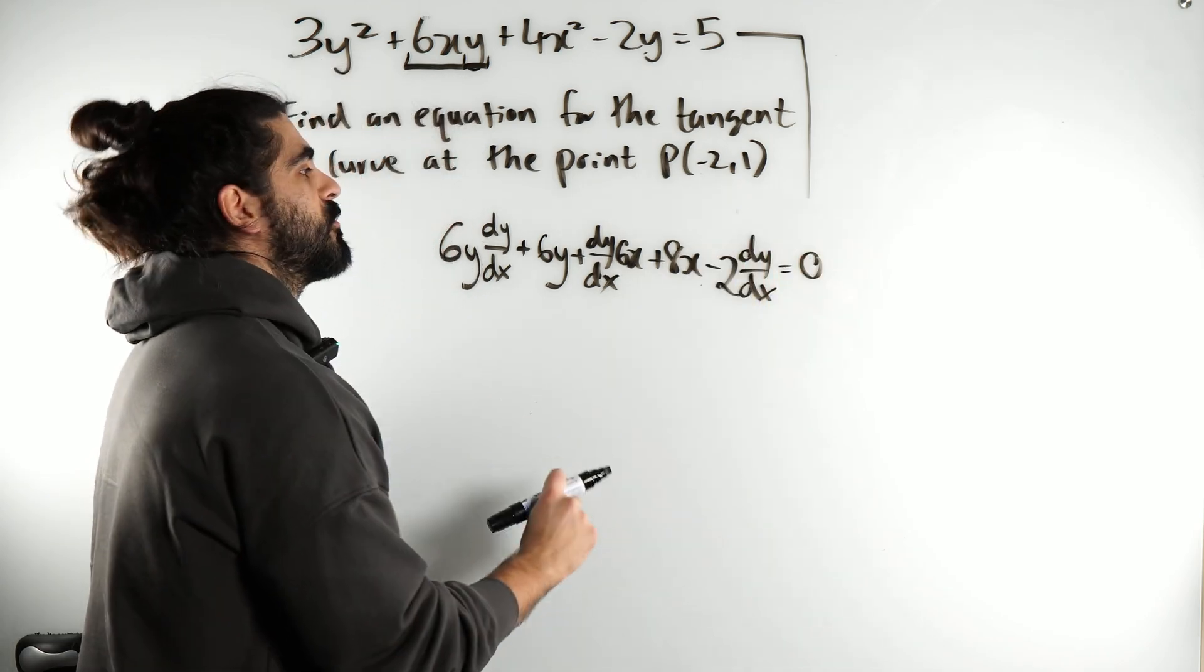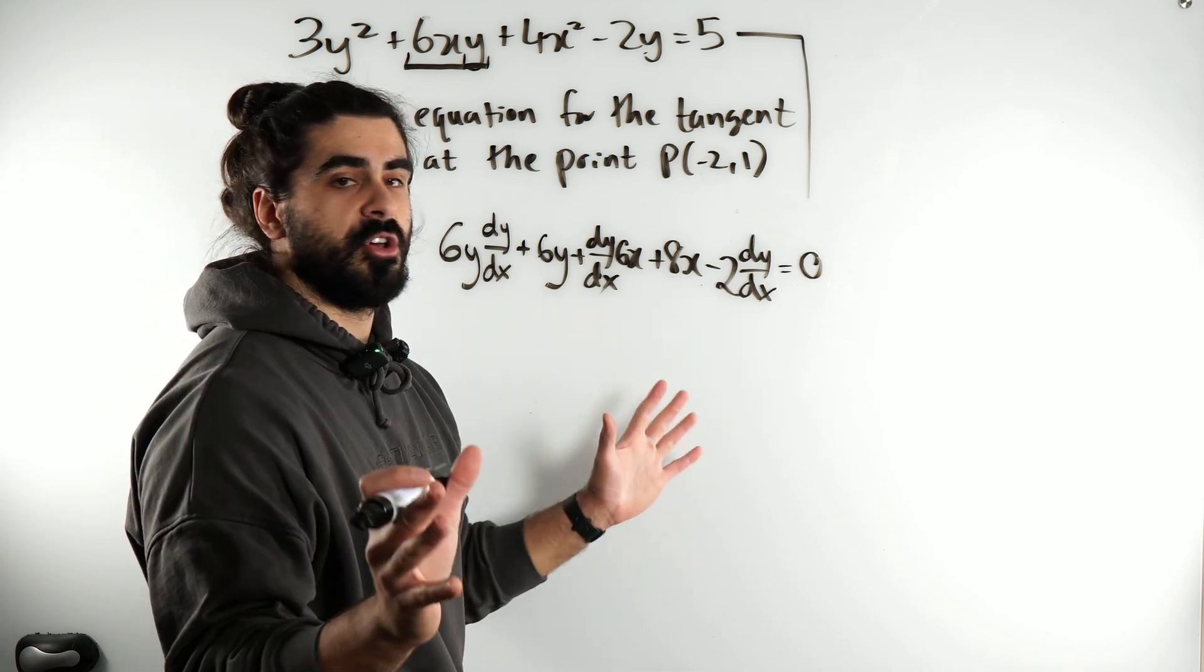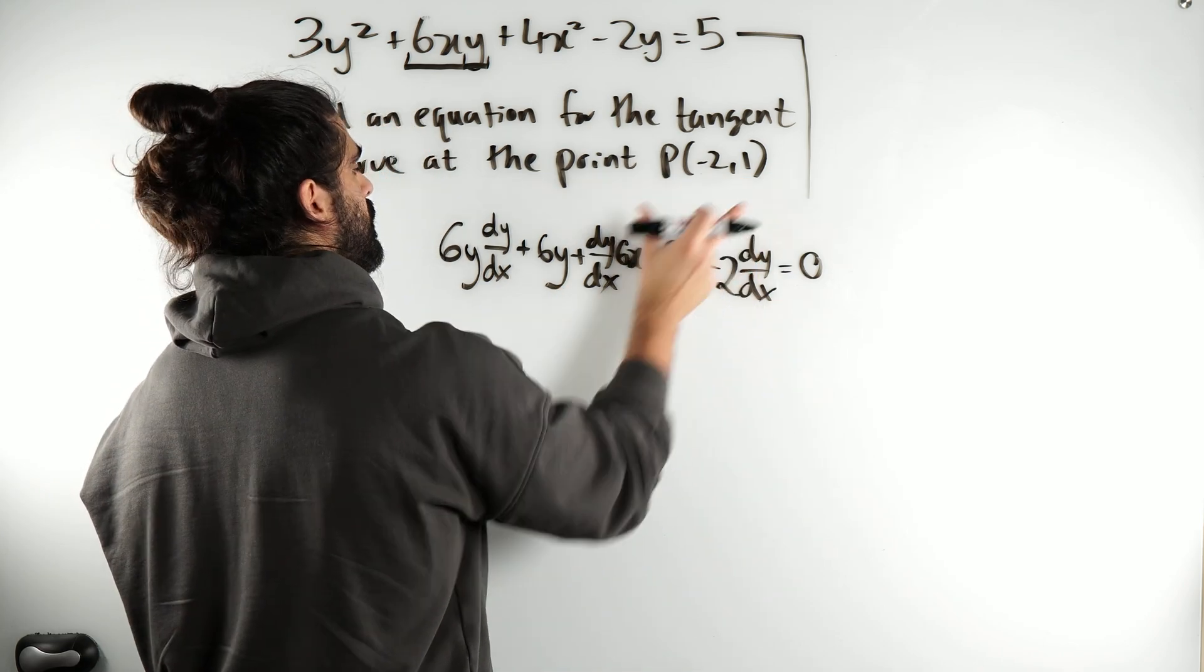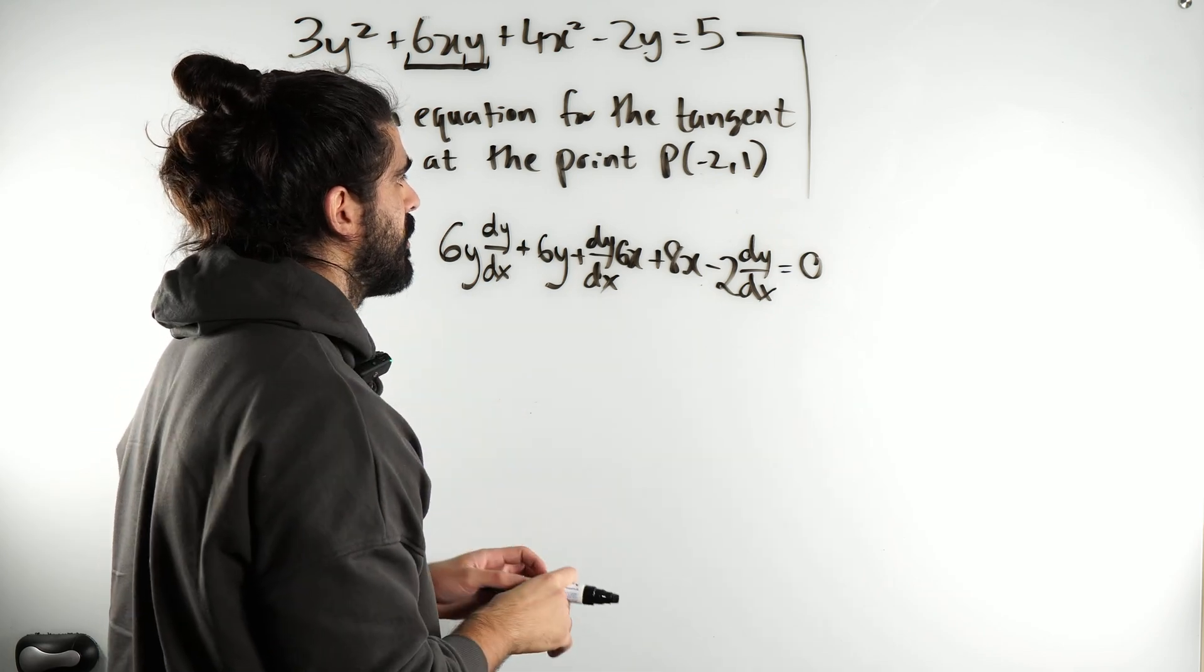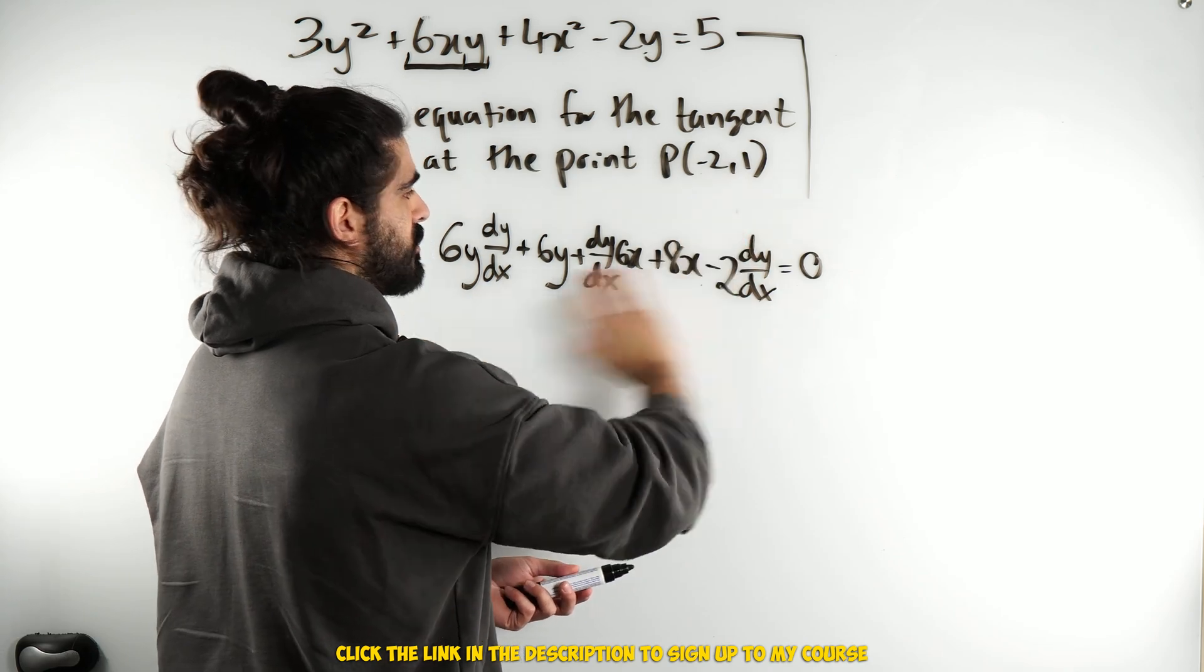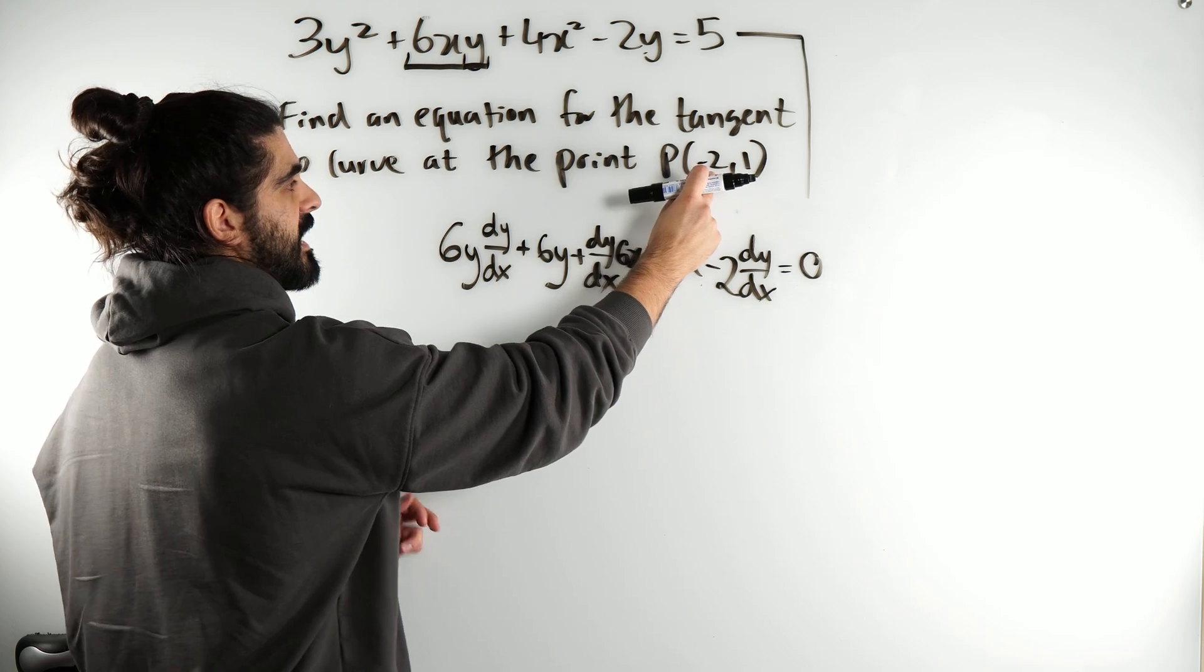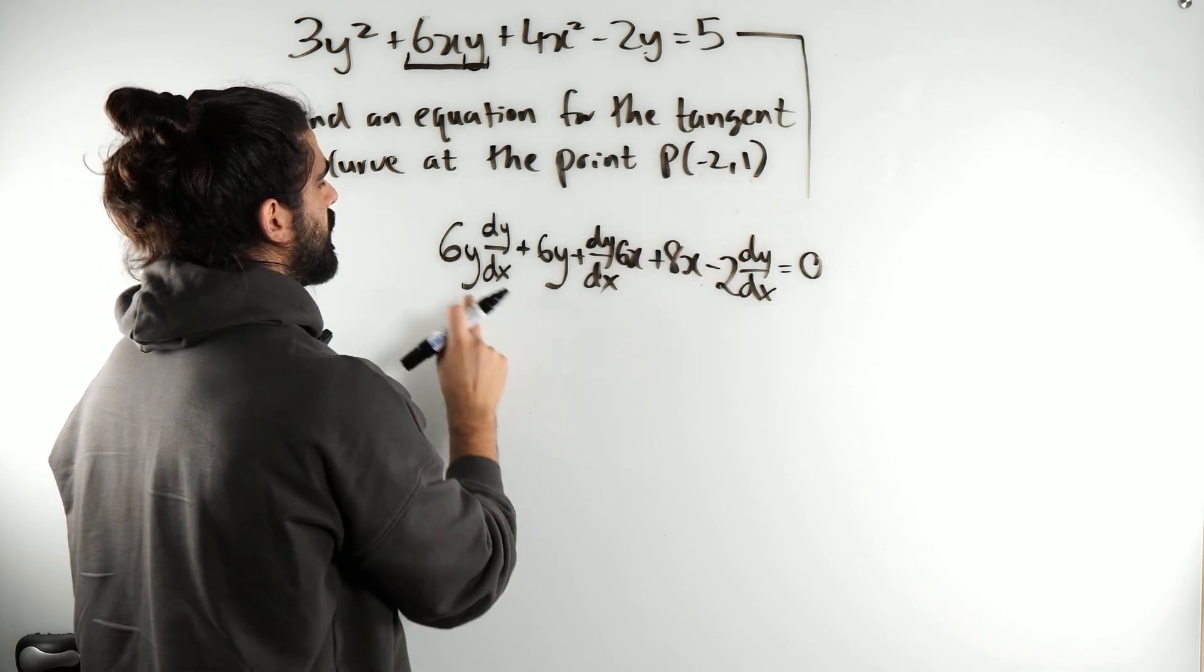And now what a lot of students do is they rearrange for dy dx. That's just long. Guys, they've given you the point, just sub it in now, and then you can rearrange for dy dx after. A lot of the time in the exam, they actually give one of these values to be 0, so it's a really clean solve for dy dx. So, wherever I see x, I'm going to change it to minus 2, y is 1.